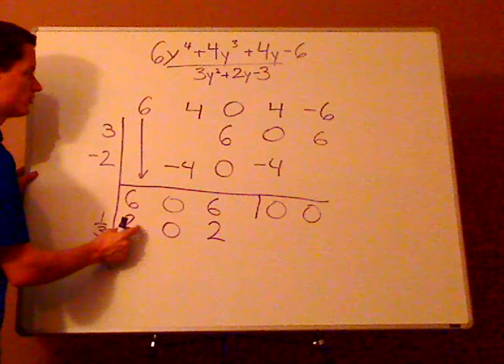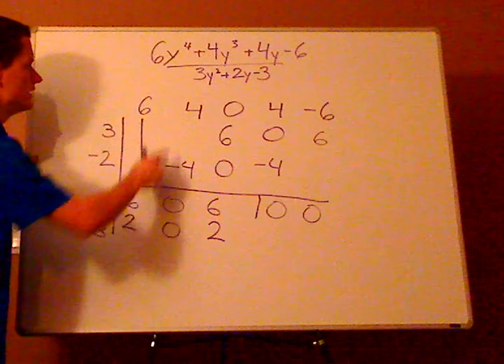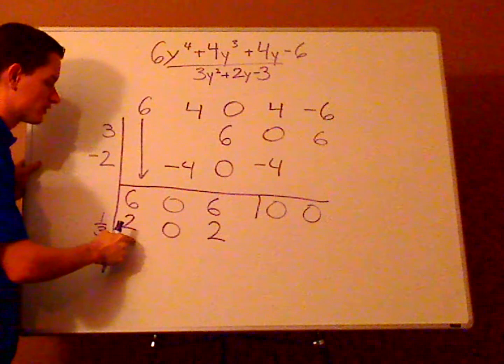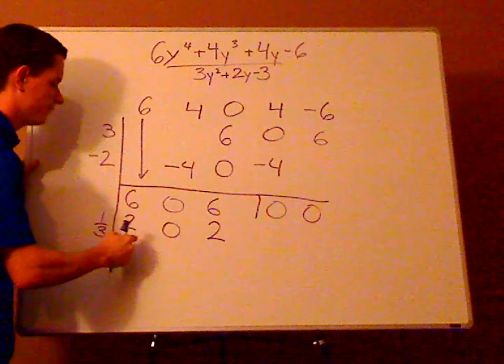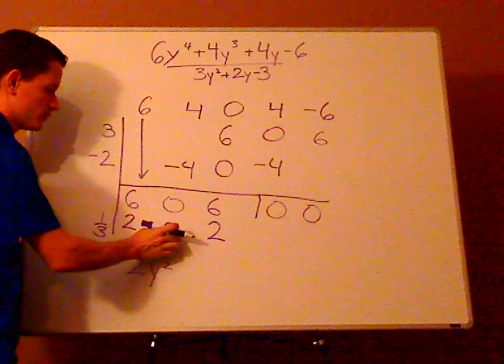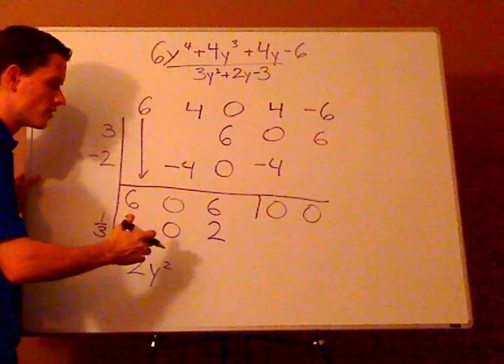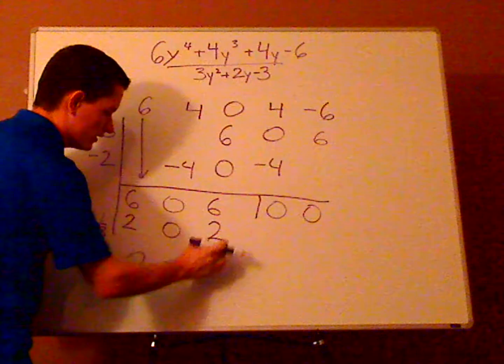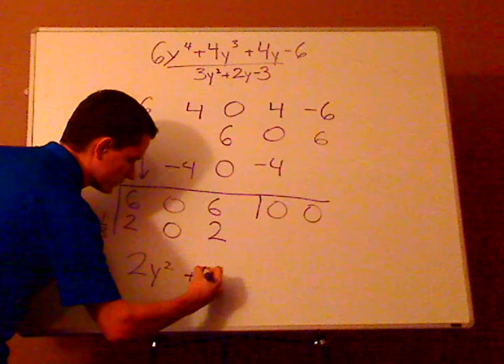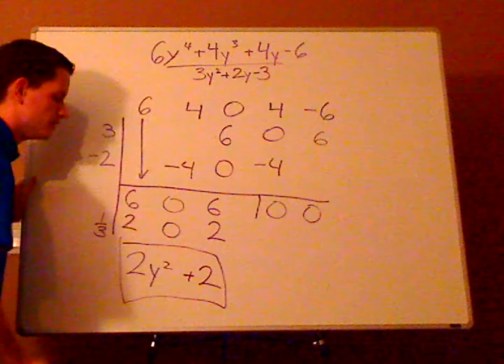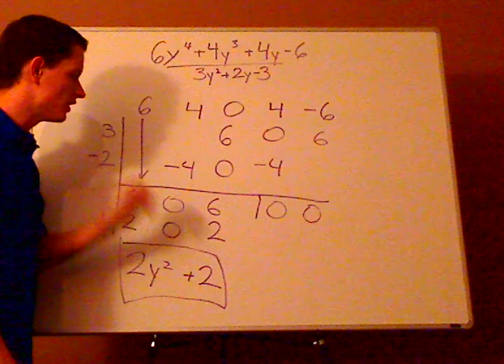This right here starts, it's not 1 less degree, it's 4 minus 2, so it starts with y squared. So it would be 2y squared. This would be y which is just 0 so you don't have to say it, and then this 2 right here, so plus 2. So your final answer is 2y squared plus 2.